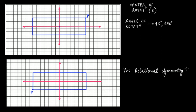If we look at what has happened — highlighting this in green — this length is now here, and this one is here. So yes, at 180 degrees we do have rotational symmetry.